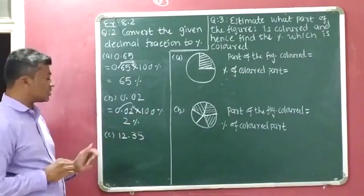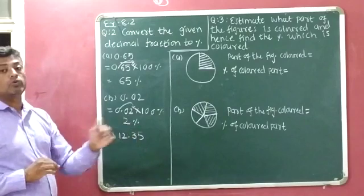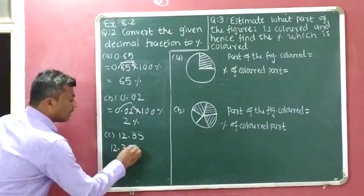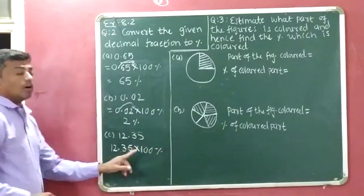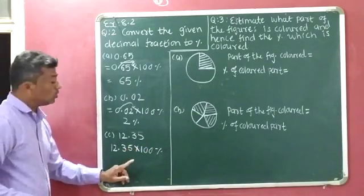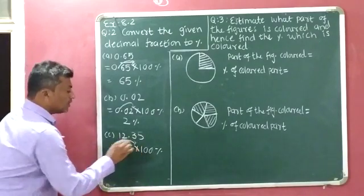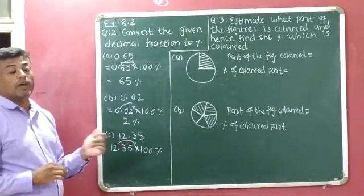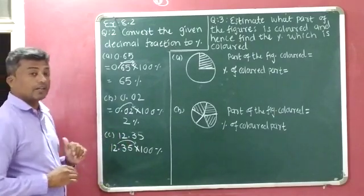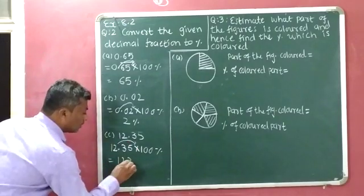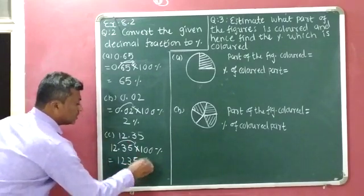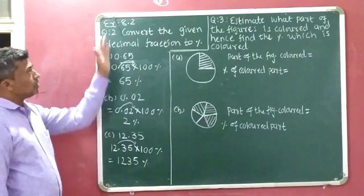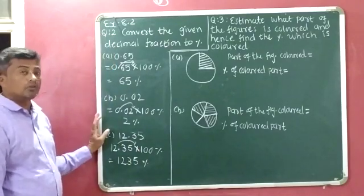Now 12.35 also has to be converted into percentage. So 12.35 multiplied with 100%. Since 100 has 2 zeros, the decimal point moves right side by 2 places, landing after the 5. Since no digit is available after 5, the final answer is 1235%. This completes the explanation of question number 2.